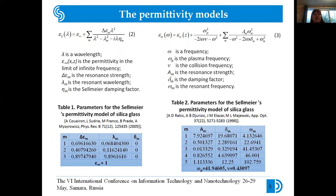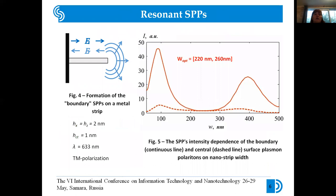Silver was considered as a material of nano-strip. So, table 2 shows parameters for the Drude-Lorentz permittivity model of silver.